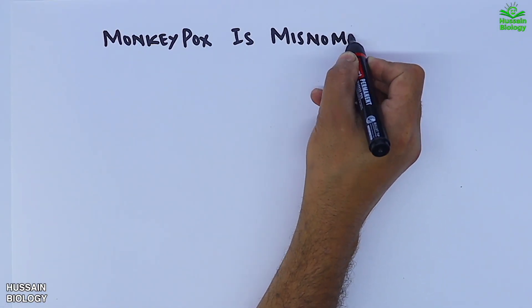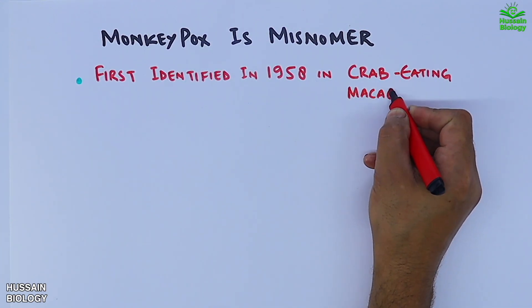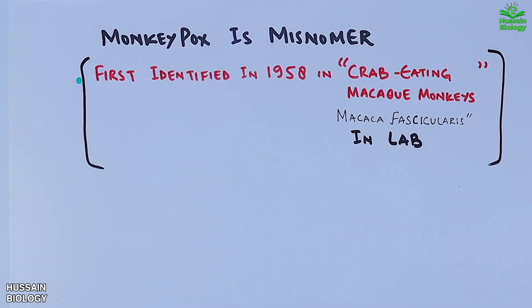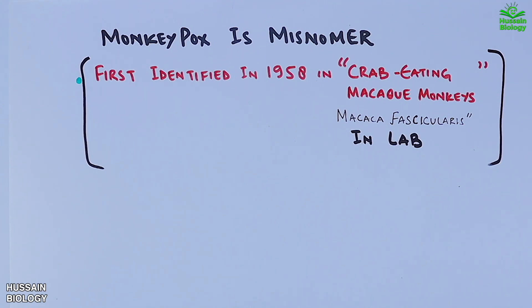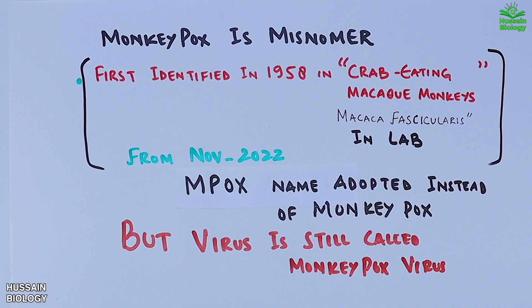Monkeypox is a misnomer, as it was first identified in 1958 in crab-eating macaque monkeys in a laboratory, which is where it gets its name. However, its most susceptible hosts are rodents like Gambian giant rats, tree squirrels, and dormice. To address this, the World Health Organization renamed it — from November 2022, the name mpox was adopted instead of monkeypox. The disease is now called mpox disease, but the virus is still called the monkeypox virus in common language.